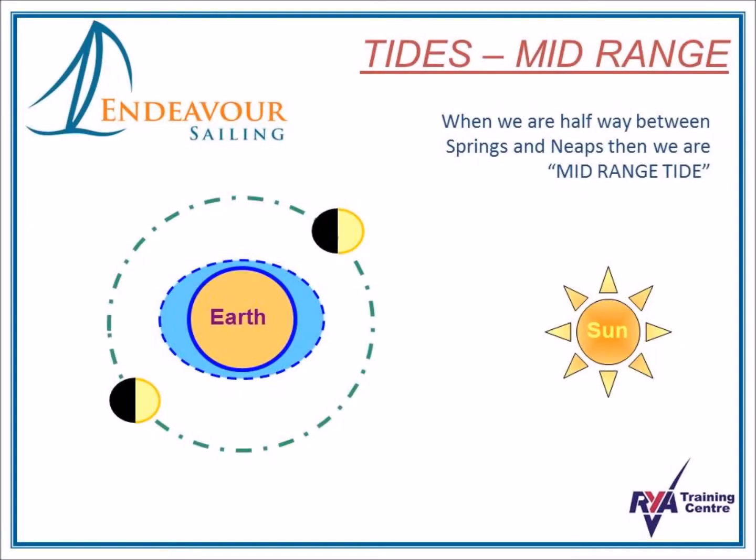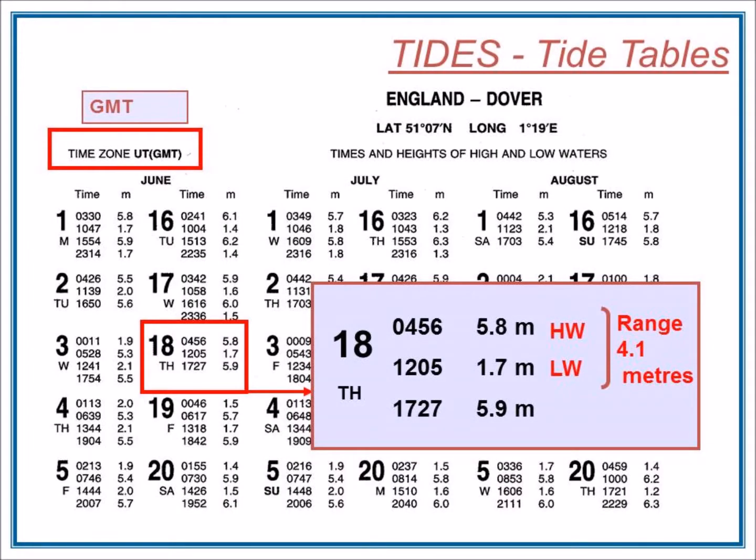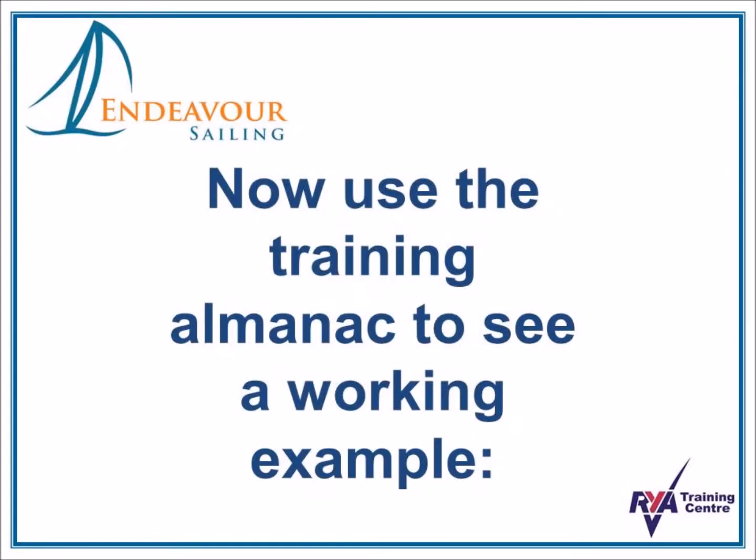When we are halfway between these points, we're on a mid-range tide. Here we have an example of tide data as found within an almanac. And we can use this tide data to work out whether we're on a springs, a mid-range or a neap tide, by calculating what the range of the tide is today. So now we'll look at some working examples.